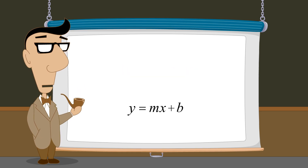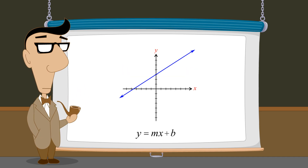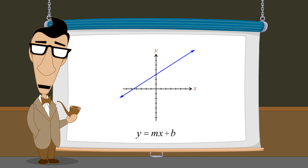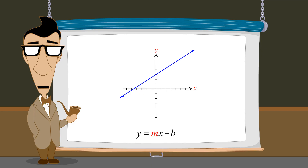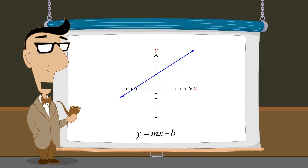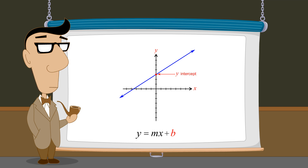The slope-intercept form involves two constants, m and b. The numerical value of m is the slope of the line, and the value of b determines the point at which the line crosses the y-axis, called the y-intercept.